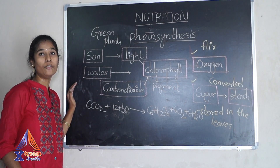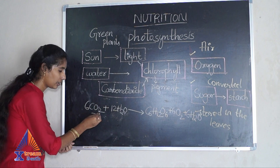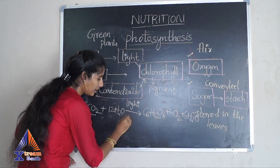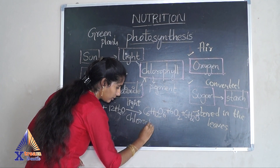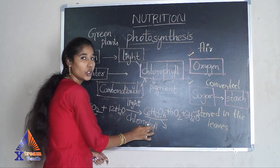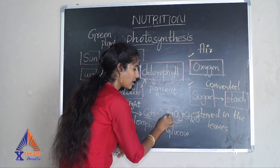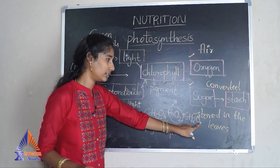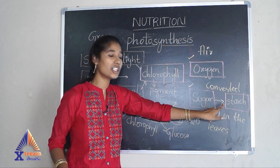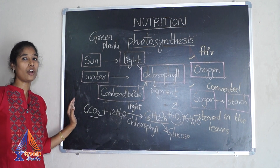This is the reaction of photosynthesis. It needs six molecules of carbon dioxide and 12 molecules of water, in the presence of light and using chlorophyll. It converts these into glucose, which is a sugar, and releases oxygen and water. This oxygen enters the air, and the sugar molecule is converted into starch and stored in the leaves for use when needed.